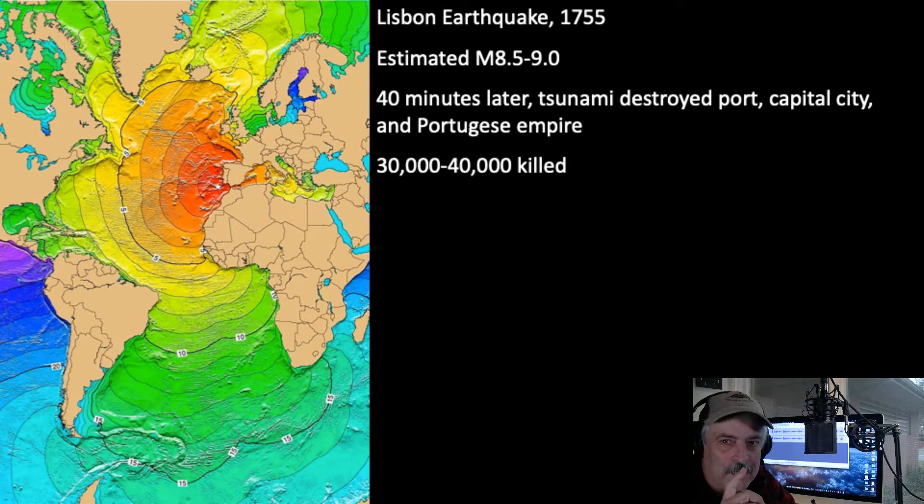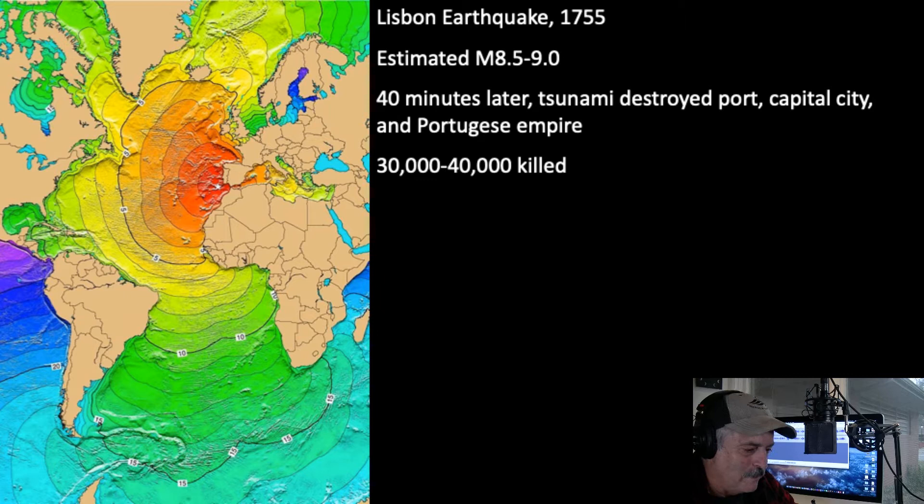So we know that earthquakes can topple superpowers. Earthquakes occur all around the world, and there are a lot of places more prone than others. I'll point out that recently there was an earthquake in Virginia — even New York City has experienced earthquakes. They're not aseismic. And even Missouri is not aseismic — we're going to look at that as well.